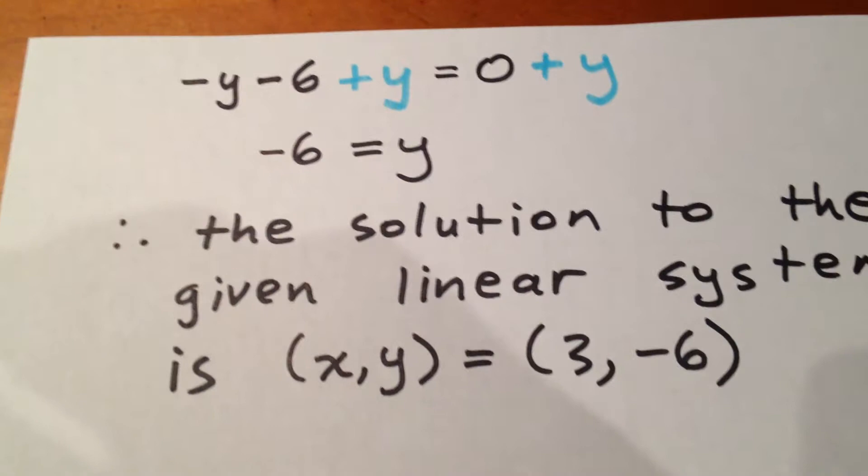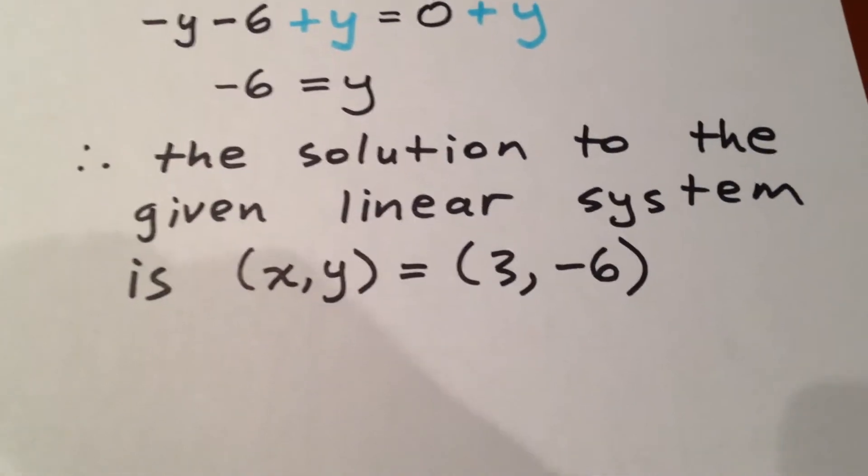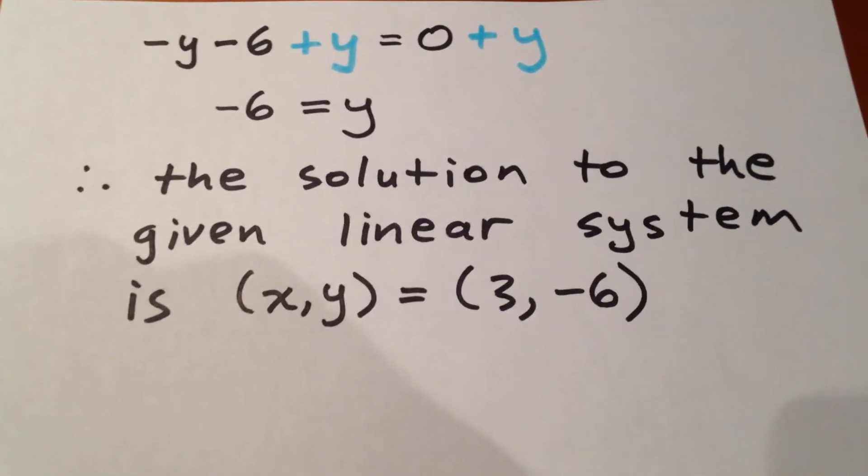So we've now solved for x and we've solved for y so we can say that the solution to the linear system is (3, -6).